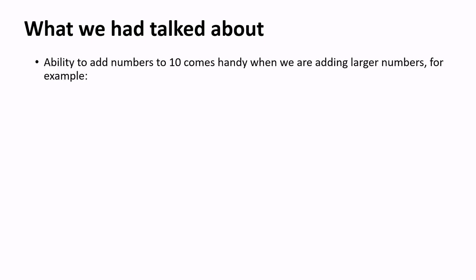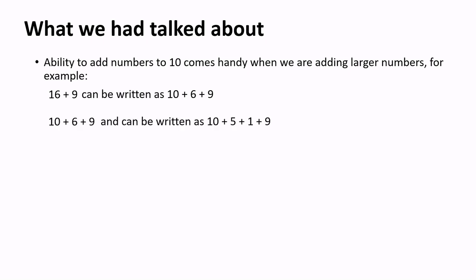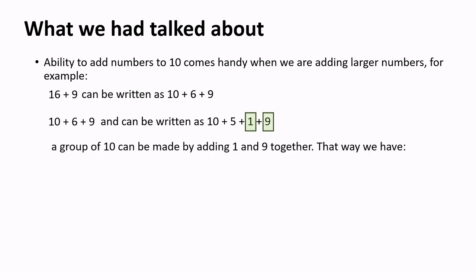Let's repeat what we have talked about today. The ability to add numbers to 10 comes in handy when we are adding larger numbers. For example, 16 plus 9 can be written as 10 plus 6 plus 9. That can be written as 10 plus 5 plus 5 plus 1 plus 9. A group of 10 can be made by adding 1 and 9 together. That way we have 10 plus 5 plus 10, which equals 25 — and that is easier to add than 16 plus 9.